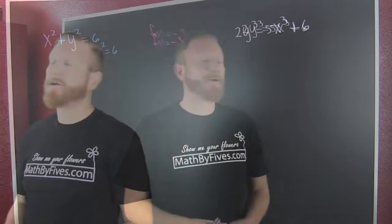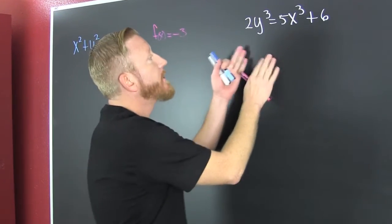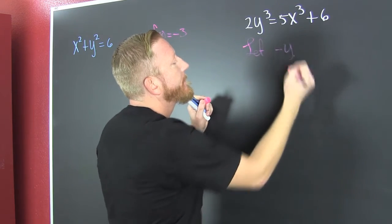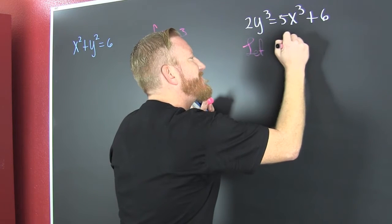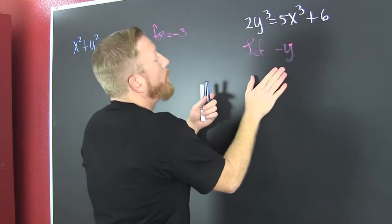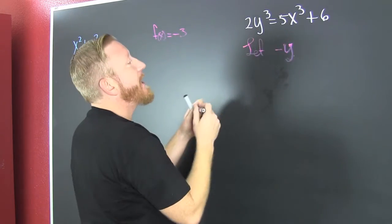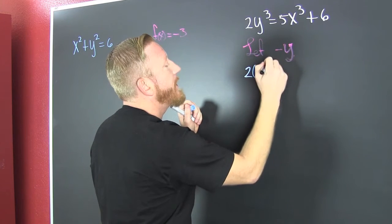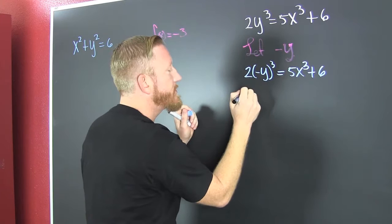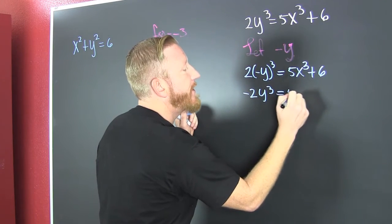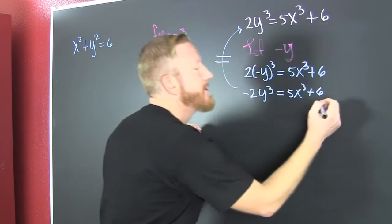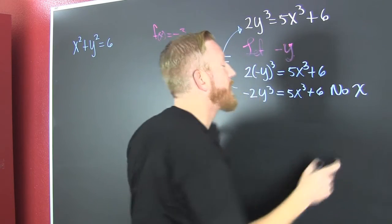We're trying to determine symmetry algebraically. To determine x-axis symmetry, we let the opposite of y. We check whether that gives the same function: two times negative y to the third equals five x to the third plus six. That's an odd power, so it becomes negative two y to the third equals five x to the third plus six. Checking — these are not the same, so it is not x-axis symmetric.